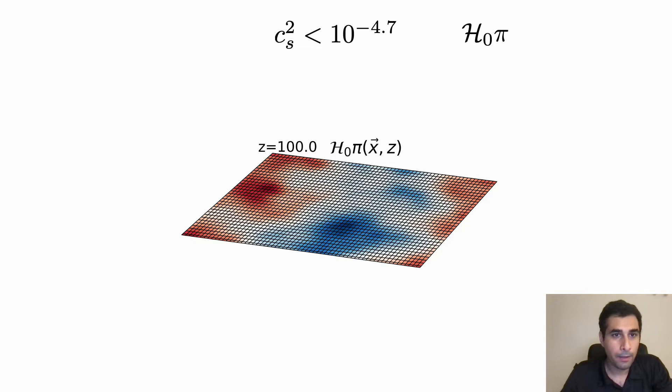What we see through n-body simulations is that it occurs only when we have small speed of sound. Specifically through experiments we know that the speed of sound squared should be less than 10 to the minus 4.7 to see this instability. And just remember the speed of sound shows how far the perturbations propagate, and when the speed of sound is pretty small means that we have localized structures and the perturbations cannot move around.